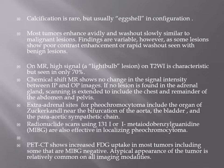If no lesion is found in the adrenal gland, scanning should be extended to the pelvis and chest to identify extra-adrenal pheochromocytoma. The most common extra-adrenal sites are the bifurcation of the aorta, the bladder, and the para-aortic sympathetic chain. Radionuclear study is effective in localizing pheochromocytoma. PET-CT shows increased FDG in cases that are negative on radionuclear study.